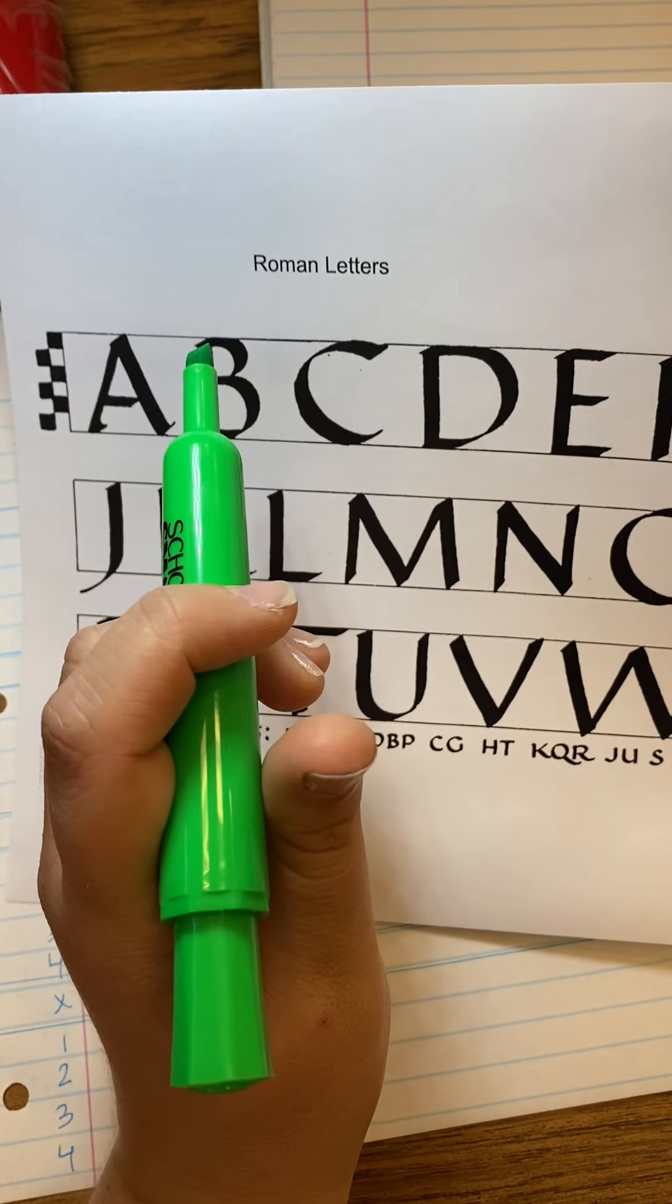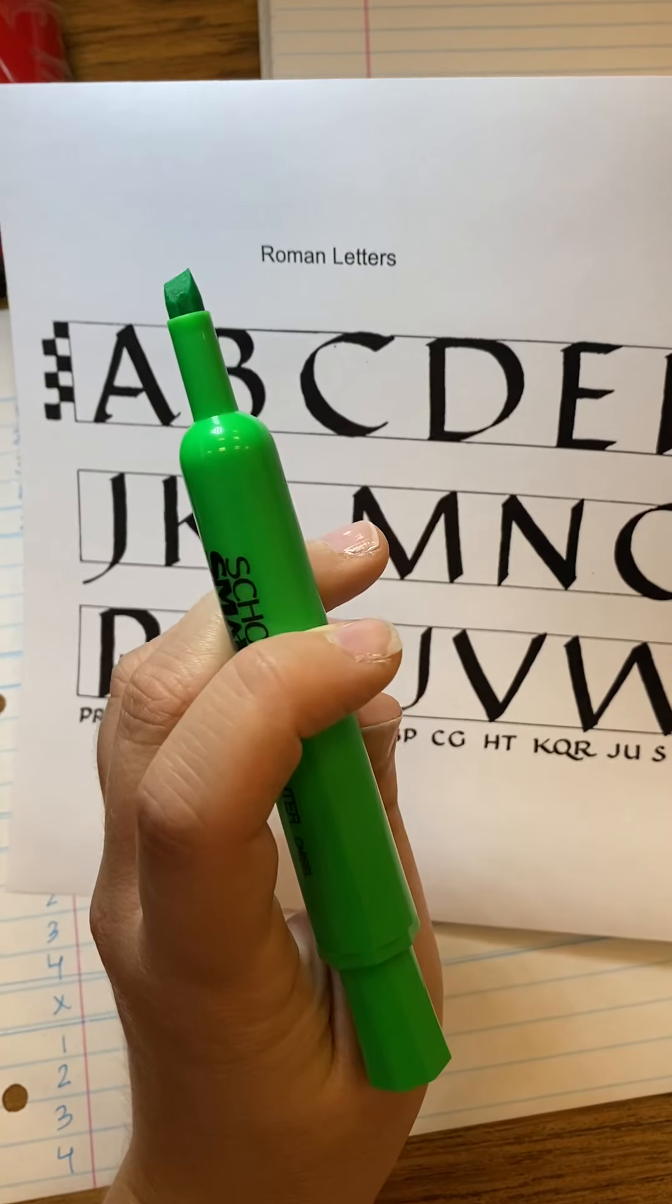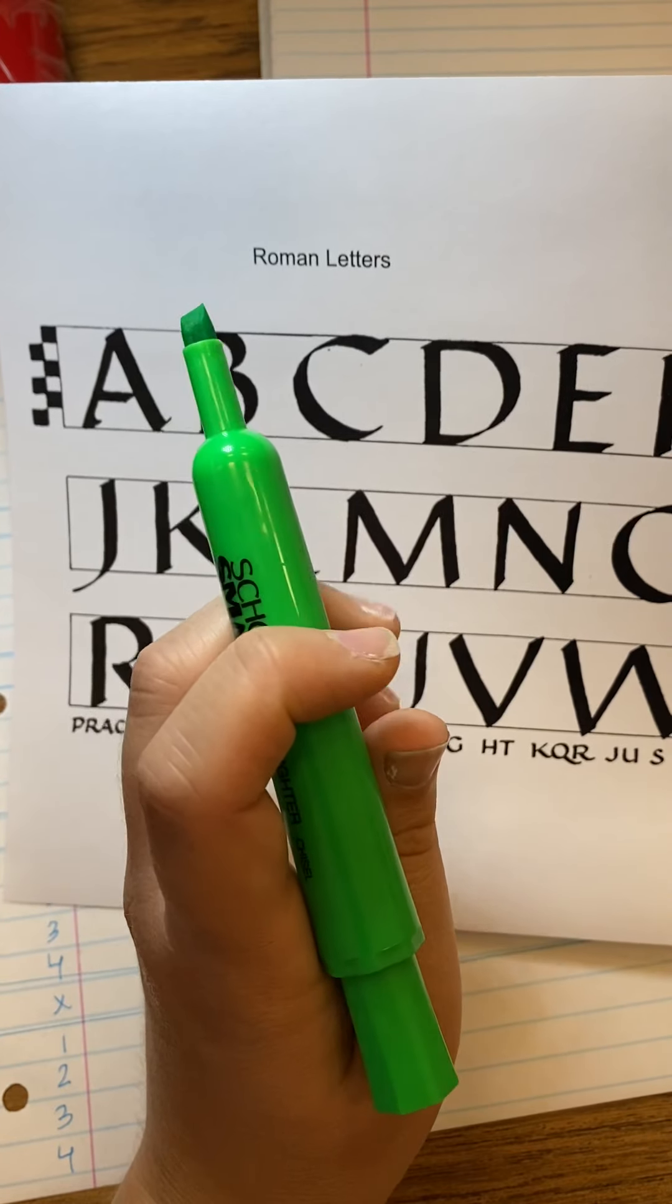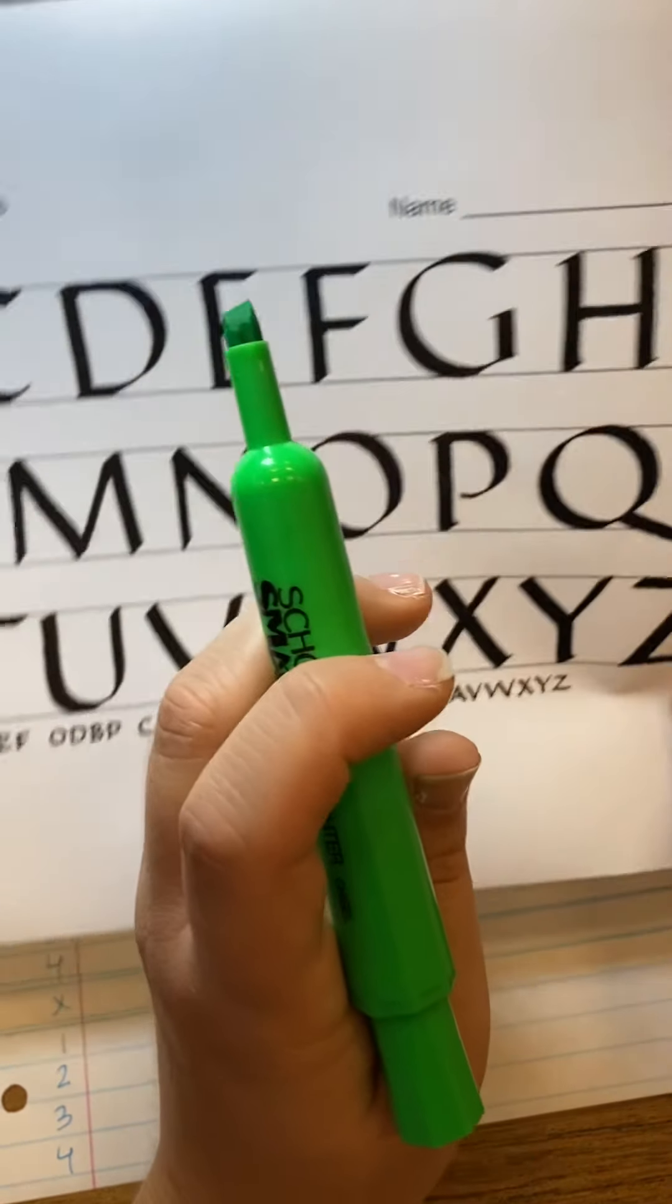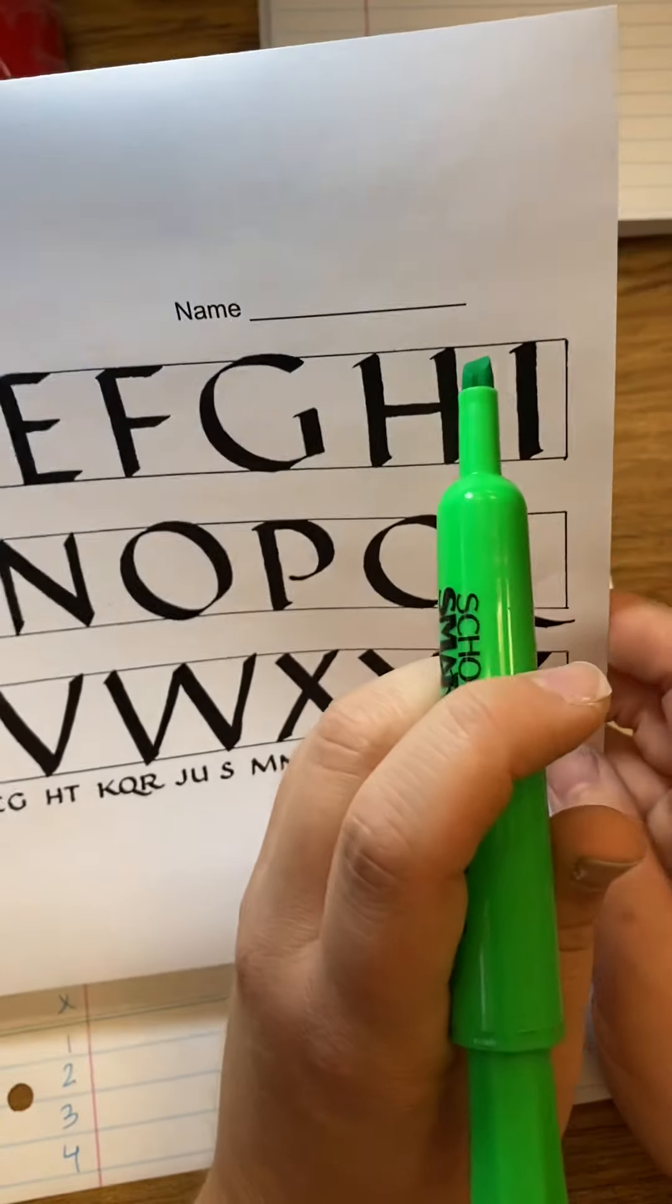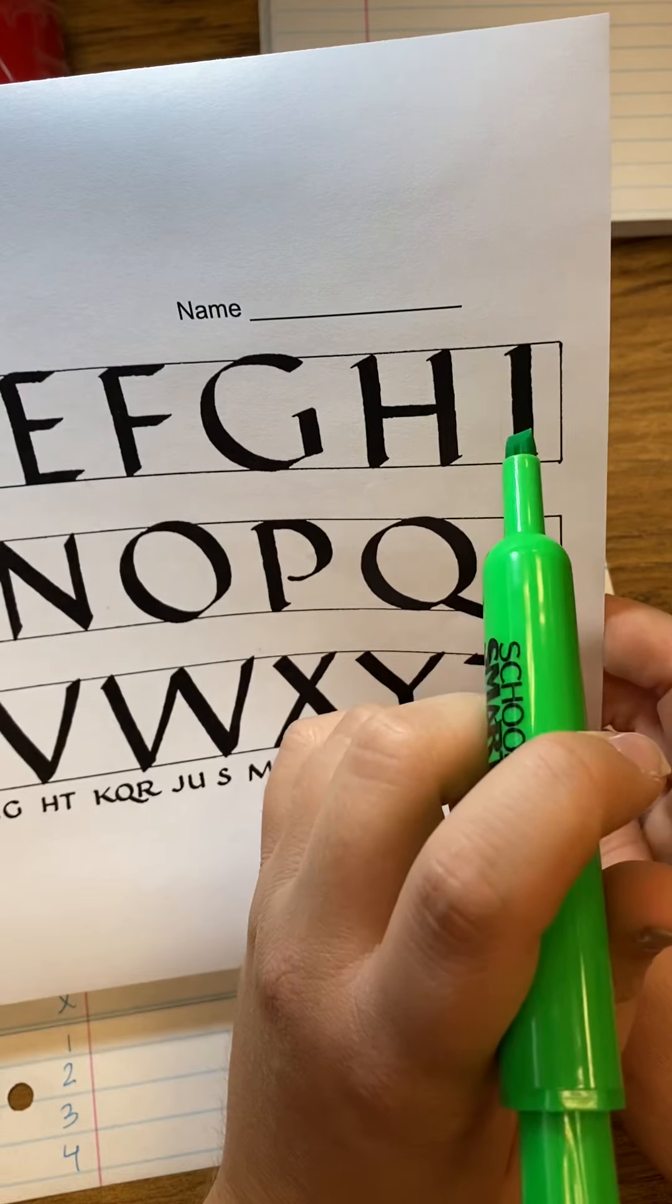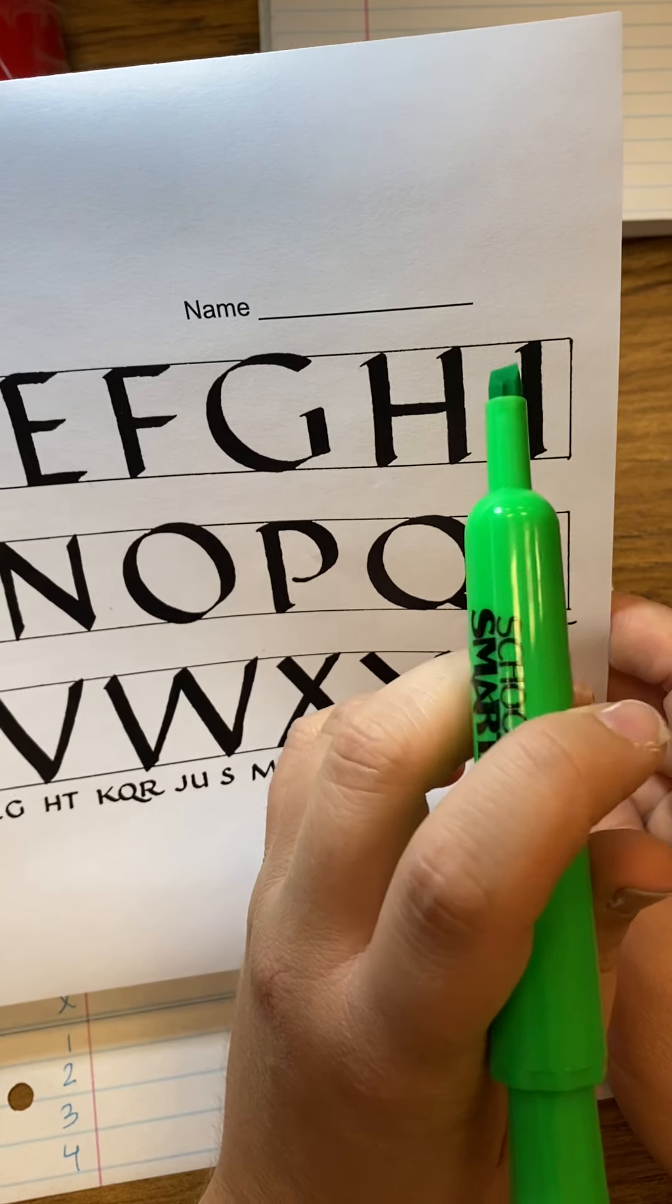You have to learn how to hold your chisel tip utensil, which could later turn into a brush or a really cool calligraphy pen if you go to Michaels or Hobby Lobby. So you're gonna make basically I's, and you're gonna practice I's for a long time.